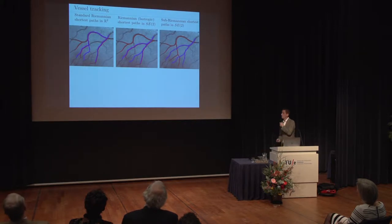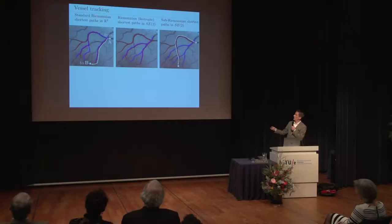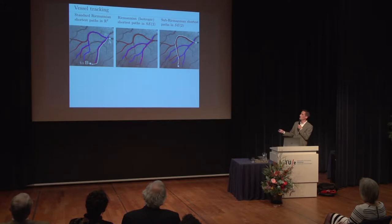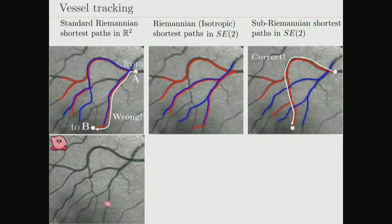Why do we do this? We can deal with complex crossings and bifurcations where standard methods completely fail. For example, going from A to B: a standard wavefront propagation directly in the image domain with gradient descent gives the wrong track. Going to the lifted space of positions and orientations and doing the wavefront propagation there gives better results, but if you treat that as a normal Euclidean space, you still get some side jumps. Cars have only two controls — you can turn the wheel and hit the gas, but they cannot step aside. If you do the processing in the orientation scores, you typically follow the correct vessels.